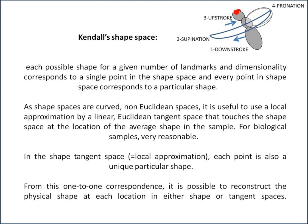In the shape tangent space, that's the local approximation, each point is also a unique particular shape. From this one-to-one correspondence, it's very possible to reconstruct the physical shape at each location in either shape or the tangent spaces. If you take any location in either of the spaces, you can very easily reconstruct the original configuration, the original wing and arrangement of landmarks relative to each other, barring size, position and orientation obviously.